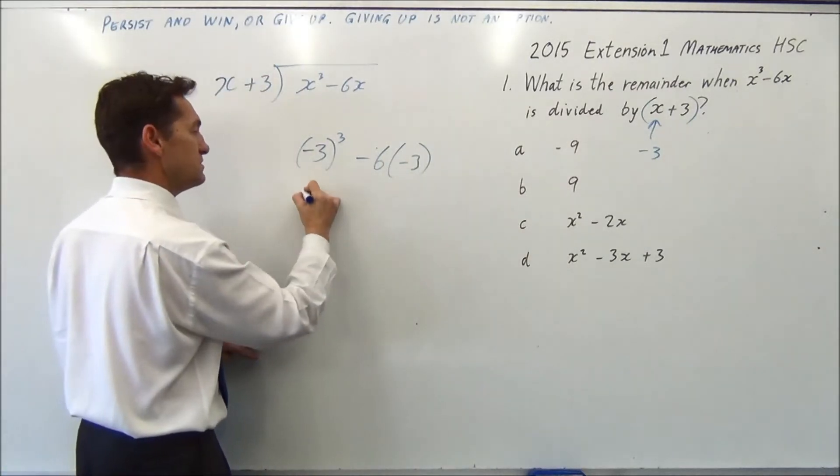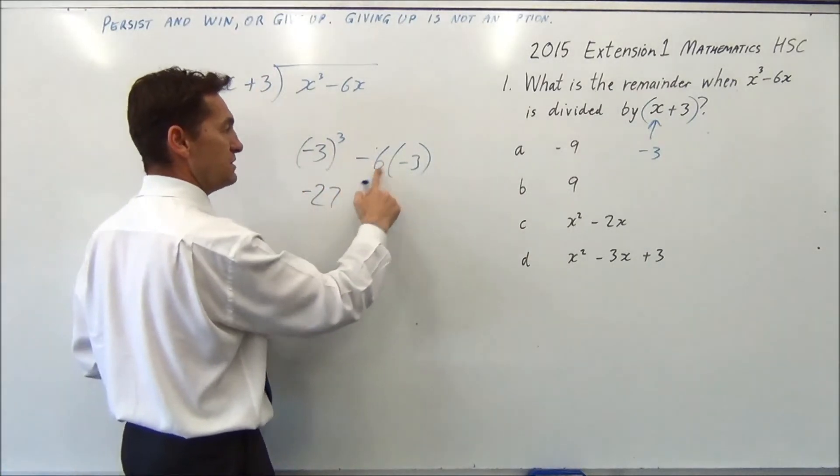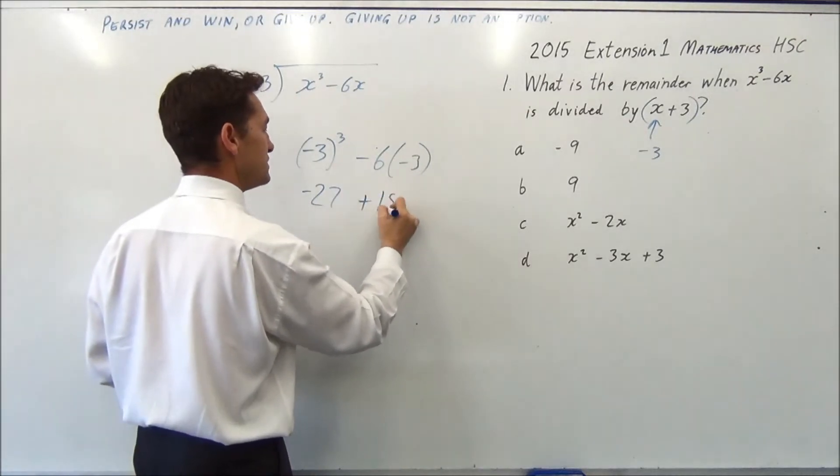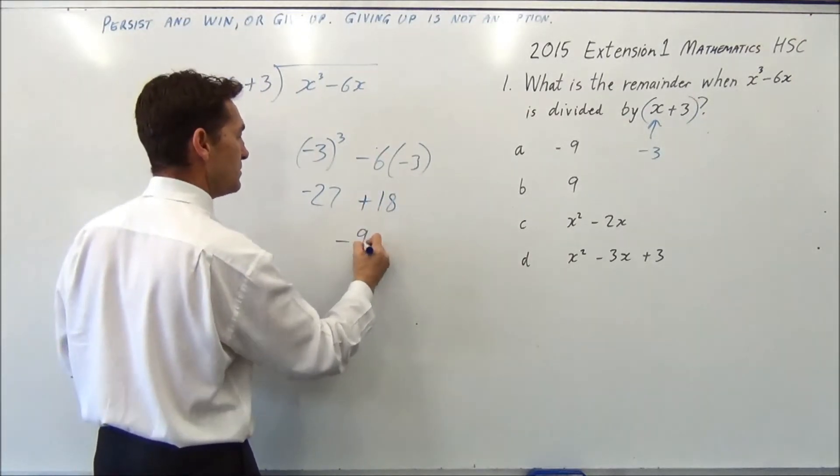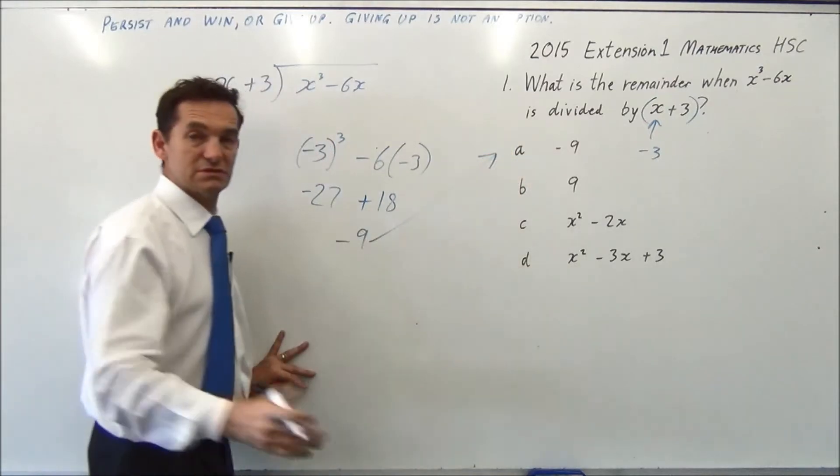Minus 3 cubed is minus 27, minus 6 times minus 3 is plus 18, so we get minus 9 which is A.